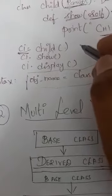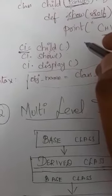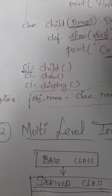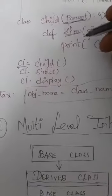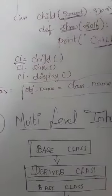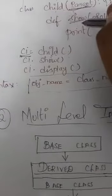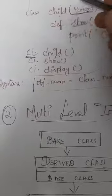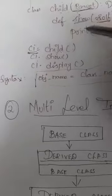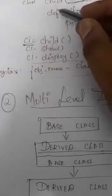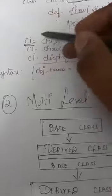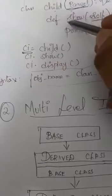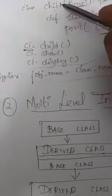In the previous video, we discussed single inheritance. Single inheritance means you have only one base class and one derived class. With the help of the derived class object, you are going to access the methods of both the parent class and child class.